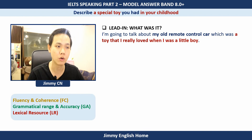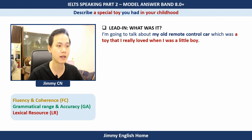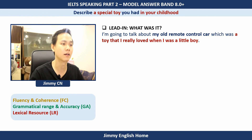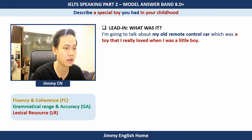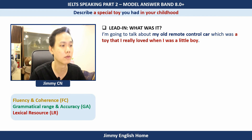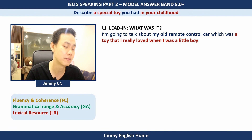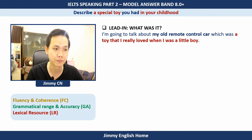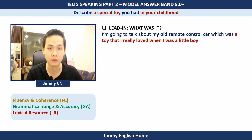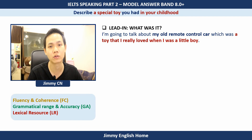For the leading sentence answering 'What was it': 'I'm gonna talk about my old remote control car, which was a toy that I really loved when I was a little boy.' Here, 'a special toy' is replaced with 'my old remote control car,' and a relative clause 'which was a toy that I really loved when I was a little boy' is used right in the first sentence — a high-level grammar feature. The topic phrase 'in your childhood' is paraphrased as 'when I was a little boy.' Other options include: when I was a child, when I was a kid, when I was younger, when I was a little girl.